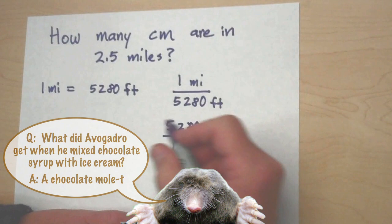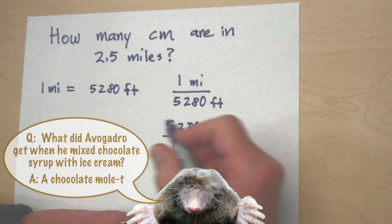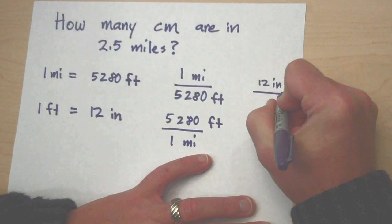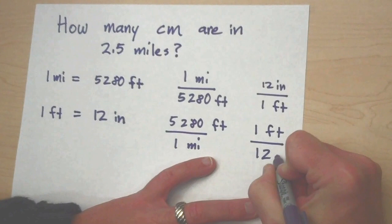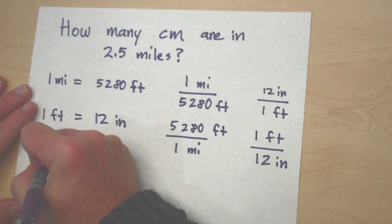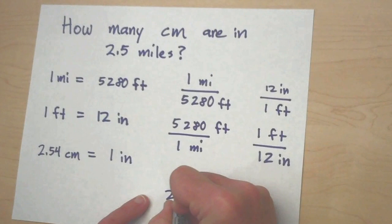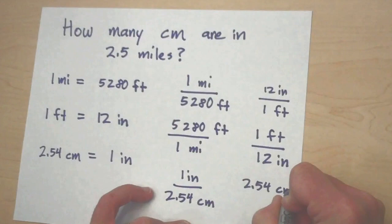It just all depends on what direction you want to go. We also know that for every foot there are 12 inches. So we could say that there are 12 inches in one foot, or we could say that there is one foot in 12 inches. Either way is correct. We also know that there are 2.54 centimeters in one inch.